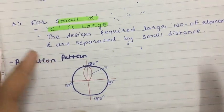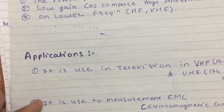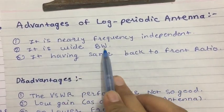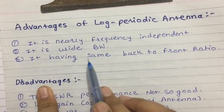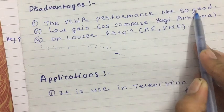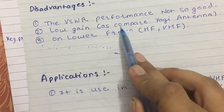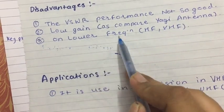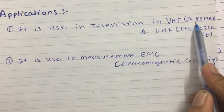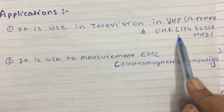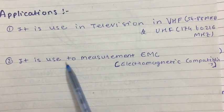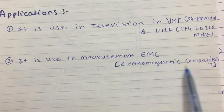Advantages of log periodic antenna: it is nearly frequency independent, has wide bandwidth, and maintains the same front-to-back ratio across its operating range. Disadvantages: VSWR performance is not very good, and gain is lower compared to Yagi-Uda antenna at lower frequencies. Applications include television reception in VHF range (54 to 88 MHz and 174 to 216 MHz in UHF), and EMC electromagnetic compatibility measurement.